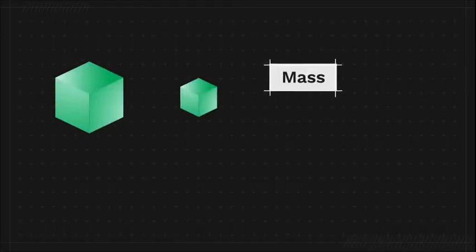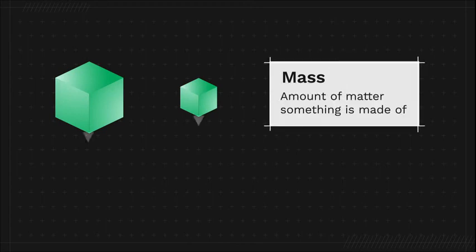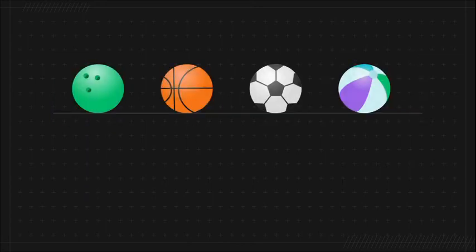The larger an object's mass, or amount of matter it's made up of, the stronger the Earth's gravity pulls on it. Which of the following experiences the strongest gravitational pull from the Earth? Even though these objects are all roughly the same size, the bowling ball has the greatest mass, so it experiences a greater gravitational pull.